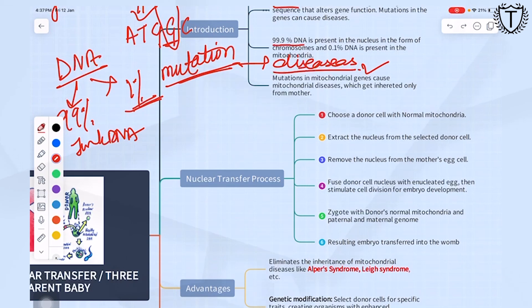99.9% of the DNA of the cell is present in the nucleus and only 0.1% of the DNA is present in the mitochondria. So naturally, any mutation if it takes place in the mitochondria of the cell, the disease thus caused will be called a mitochondrial disease.